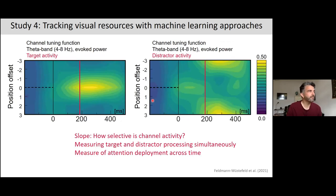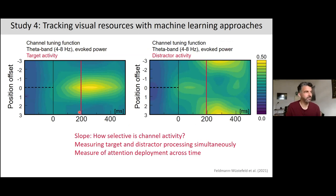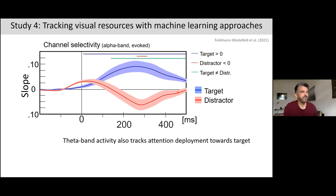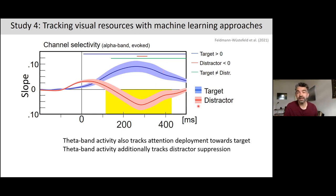Looking at theta band activity (4–8 Hz), the pattern is quite different: rather than high activity in the center, there is a valley or dip — low or below-baseline activity for the distractor. Theta band activity tracks attention deployment towards the target similarly to alpha, but the distinct feature is the below-baseline theta activity at the distractor location. This means we can use the inverted encoding model to track suppression throughout the visual field.